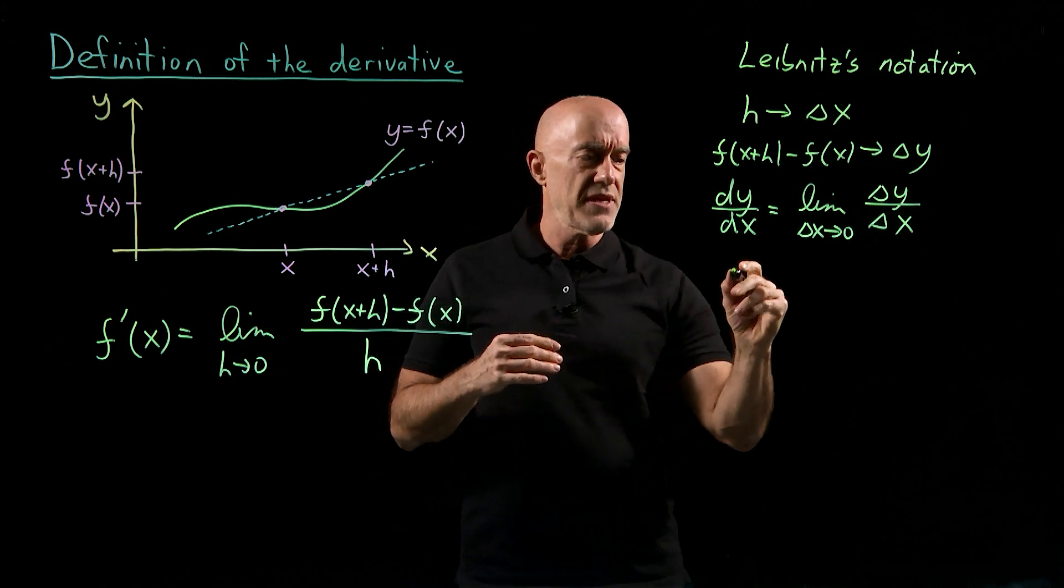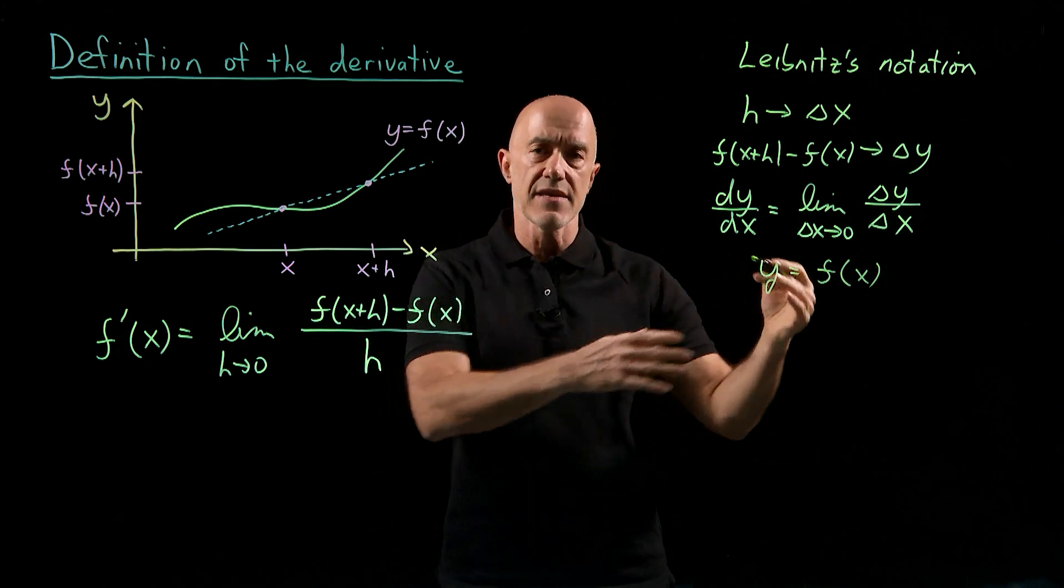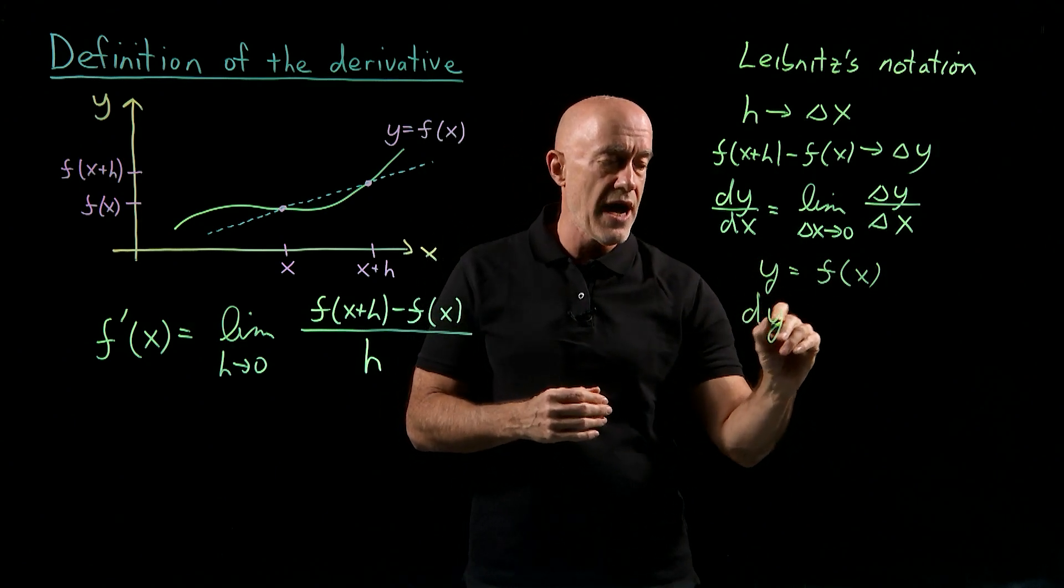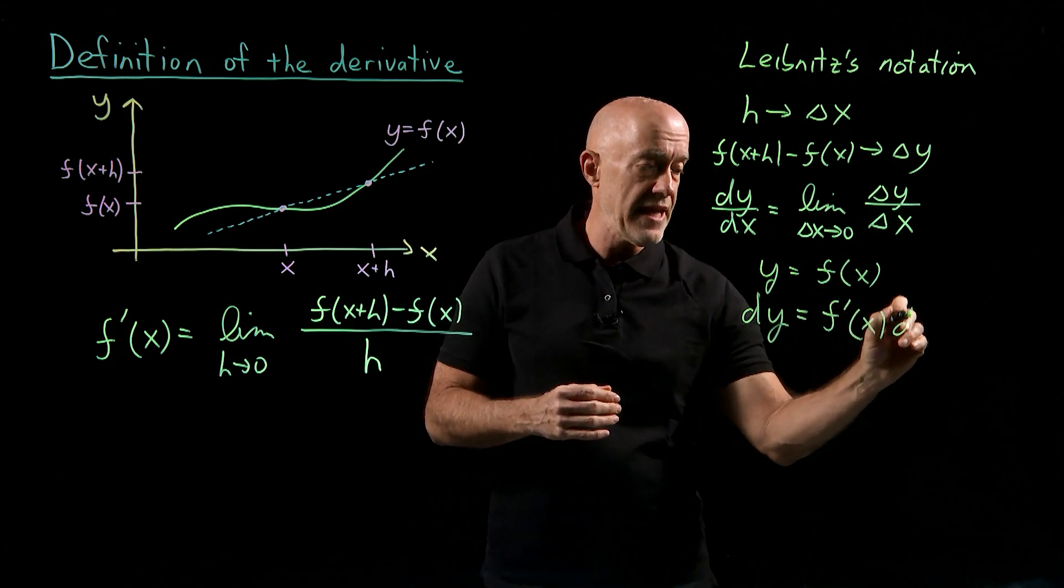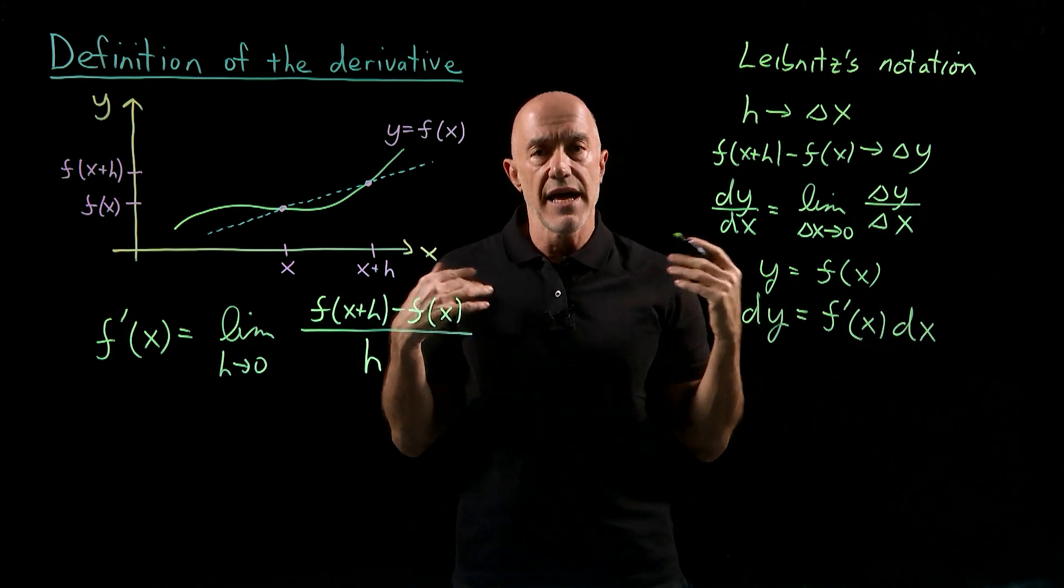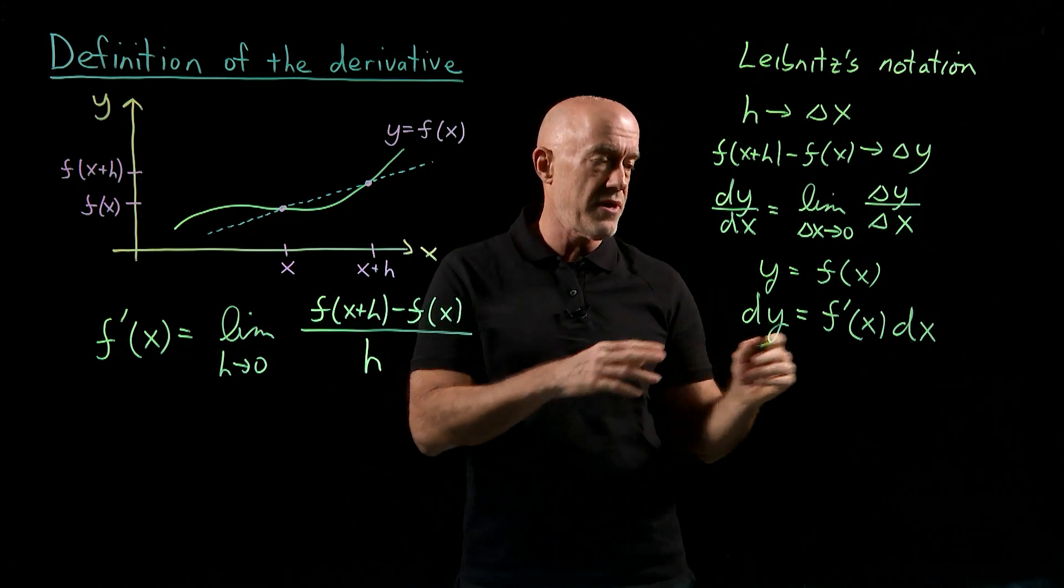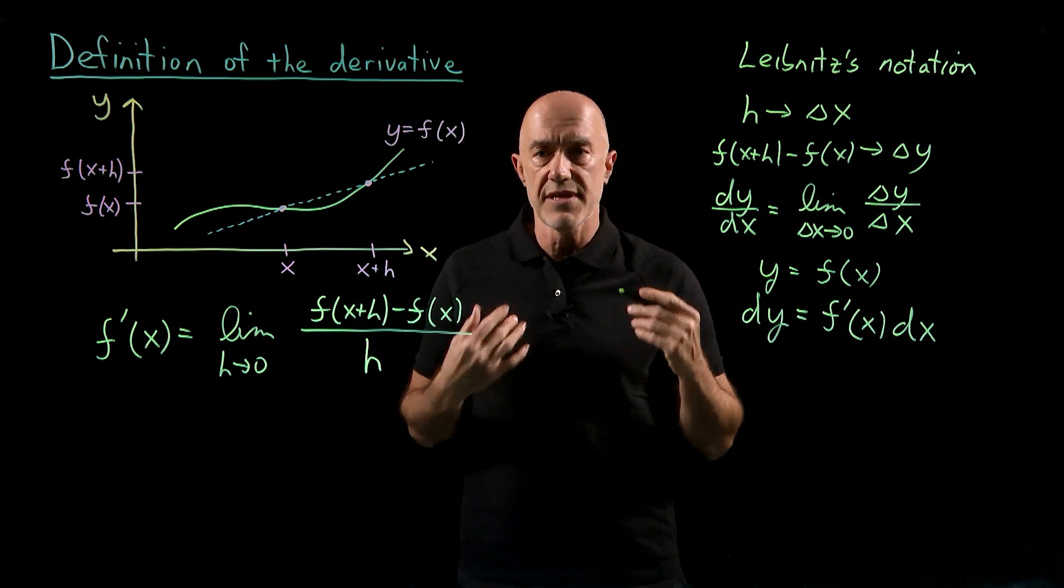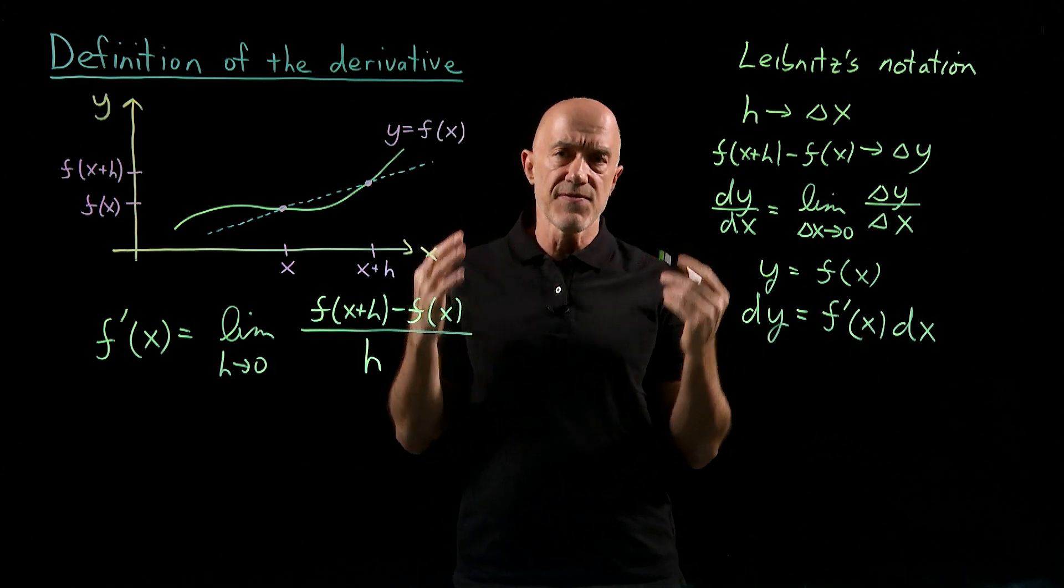So if we have something like y equals f of x, we allow ourselves to take the differential of this equation, which would be dy then is equal to the derivative of f times dx, treating dx and dy like numbers, even though they're smaller than any real number. So we see this is just the equivalent to dy dx equals f prime of x. That's the first derivative.